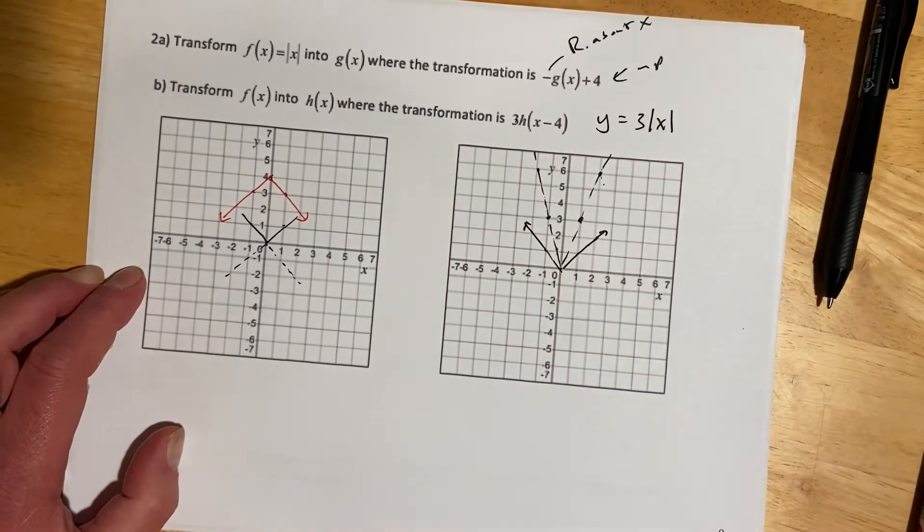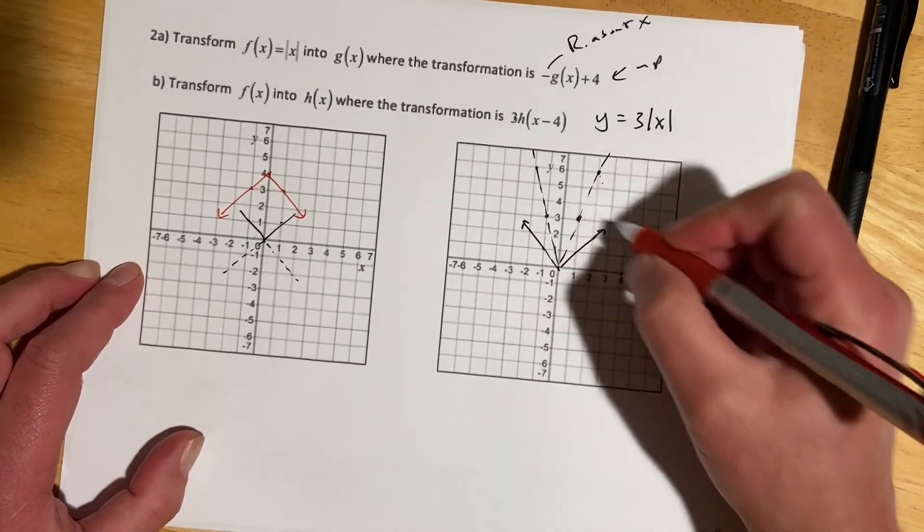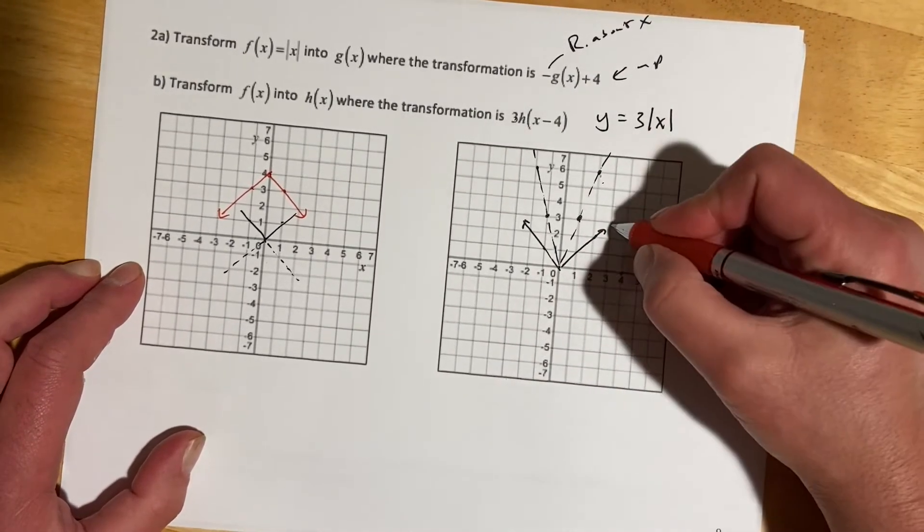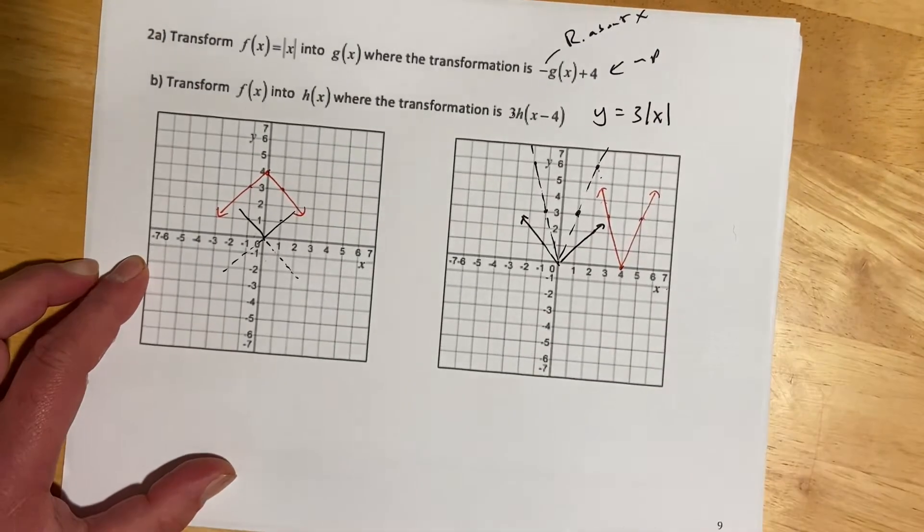That would look kind of like that. Then this says we're going to shift it right 4, so we bring that vertex right over here and copy our slope, which is 3.